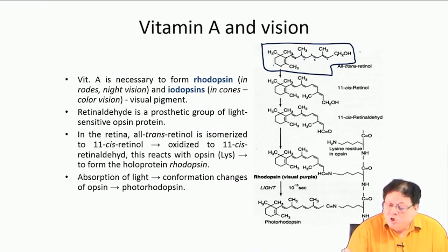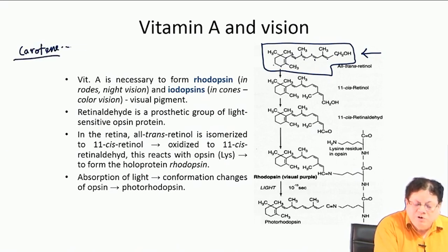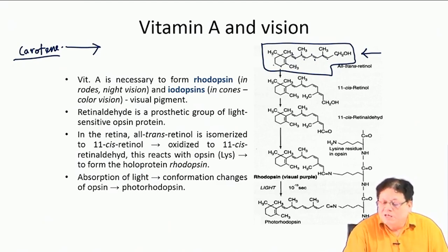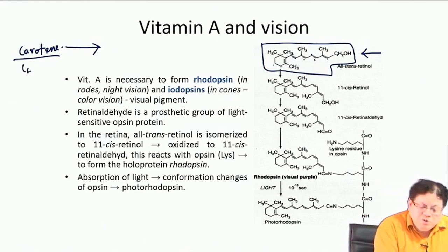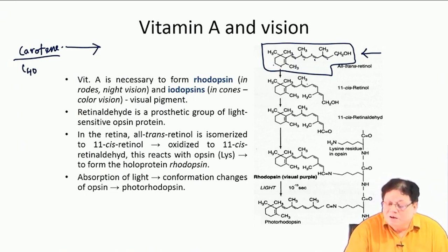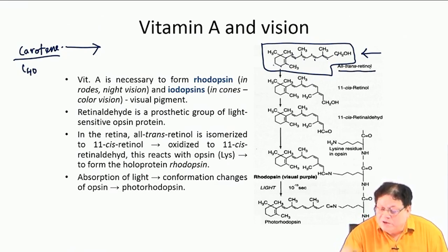Retinol is obtained from carotene — we know that eating carrots protects our vision. Carotene is the orange-yellow pigment in carrots, a C40 unit. From this C40 unit we get retinol, which has all-trans double bond stereochemistry — this is called all-trans retinol.